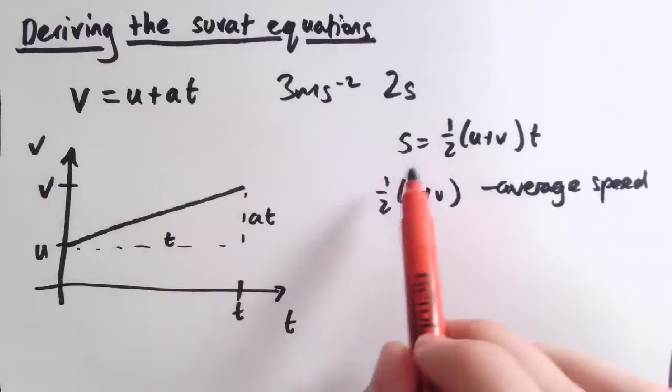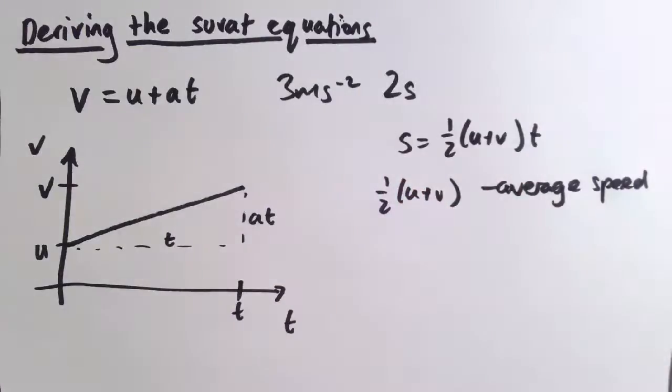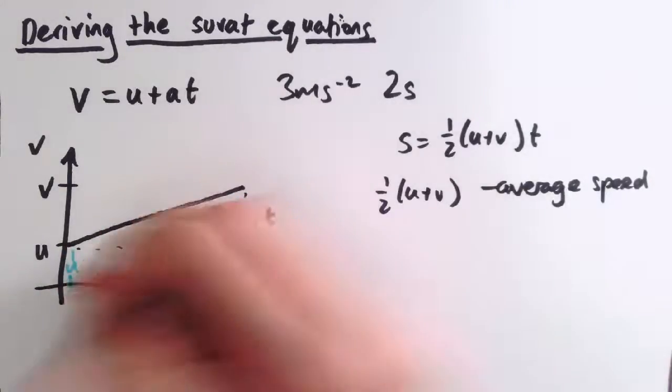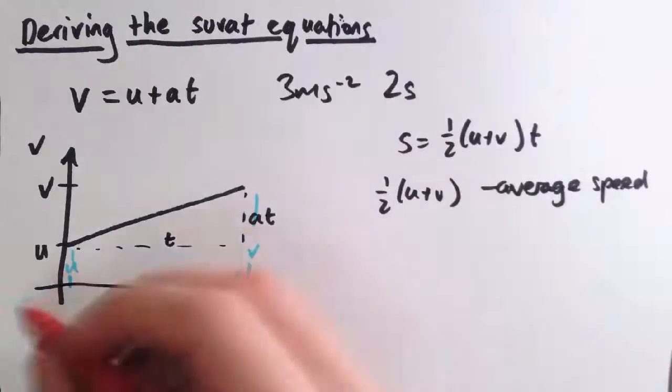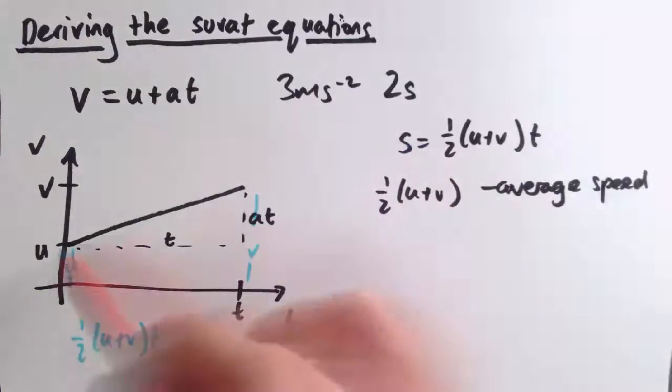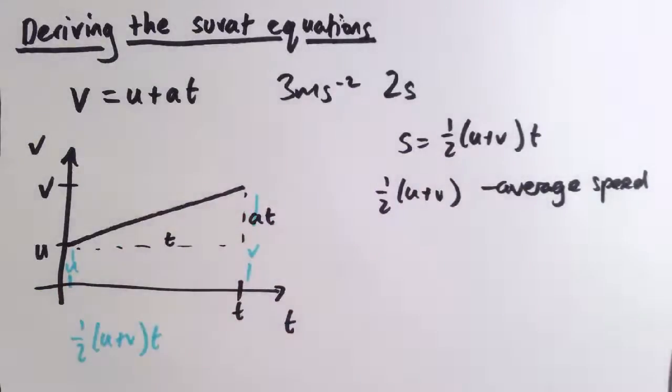What this says is that the displacement is just the average speed times the time. So again, we can see this on the graph as well, and one-half u plus v times t is the area of the trapezium here, because this is height u, this is height v, and the area of that trapezium is a half u plus v times t. And we know that the displacement is the area under a velocity time graph.